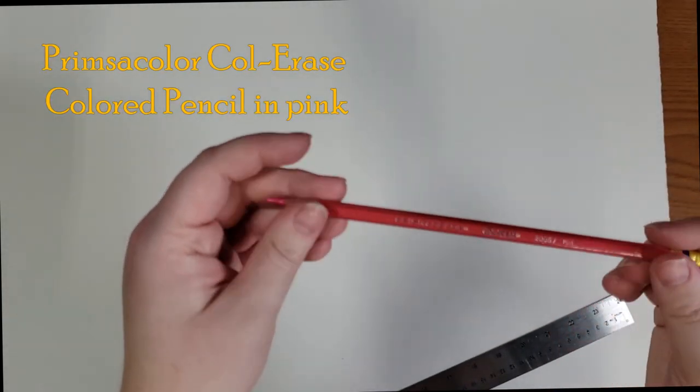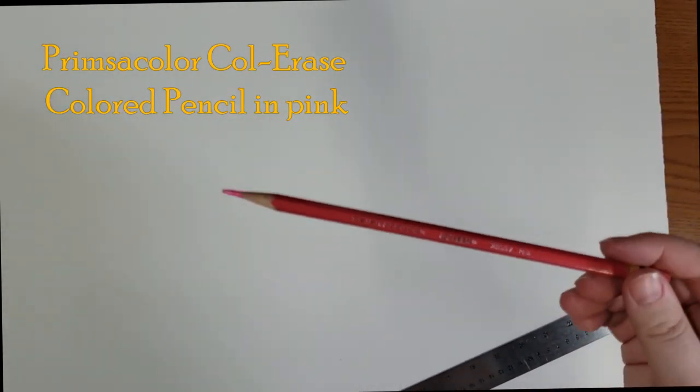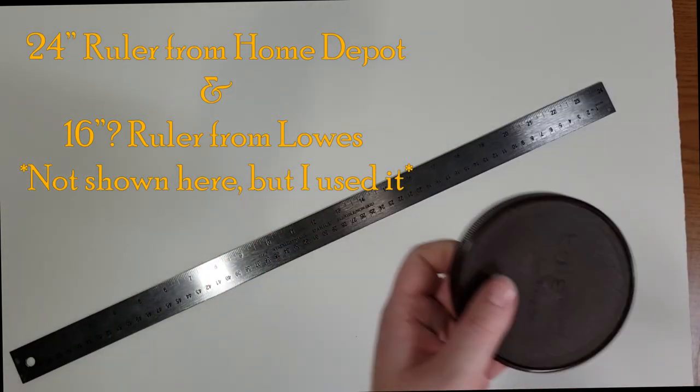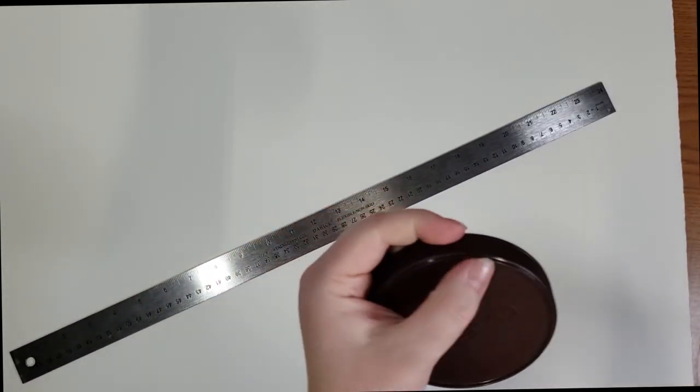So to get this guy cut up I have my Prismacolor Col-Erase pink pencil just to get a couple small lines, I have a ruler, this big guy here, and then I'm gonna be using the lid of a 12 container because it has a nice flat hard edge to fold my paper.